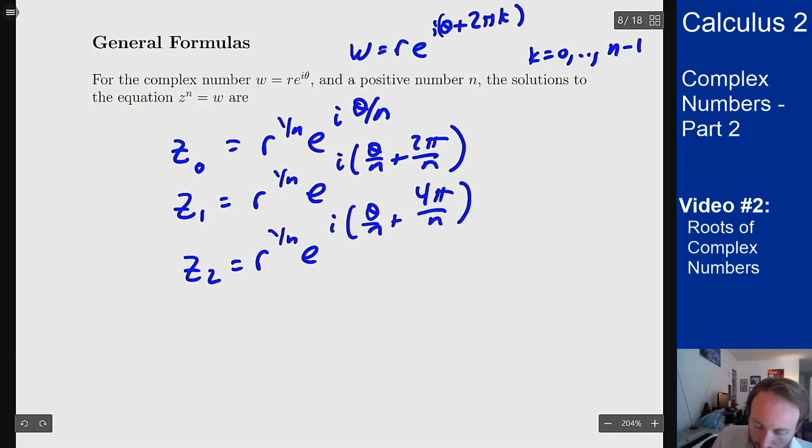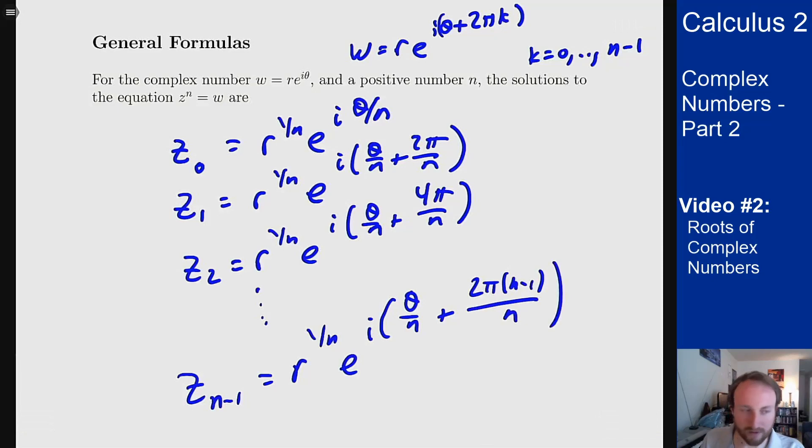I'll get z2 which is r to the 1 over n e to the i theta over n plus 4 pi over n all the way up to z n minus 1 which is r to the 1 over n e to the i theta over n plus 2 pi times n minus 1 over n. If I go one more I'll get a 2 pi left over up on top and that'll go back to z0.